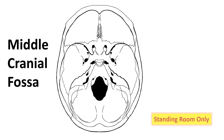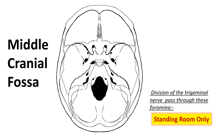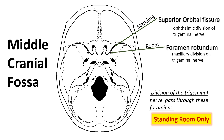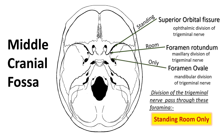Use 'standing room only' to remember the foramina through which the divisions of the trigeminal nerve pass. Standing for superior orbital fissure — the ophthalmic division passes through it. Room for foramen rotundum — maxillary division passes through it. Only for foramen ovale — mandibular division passes through it.